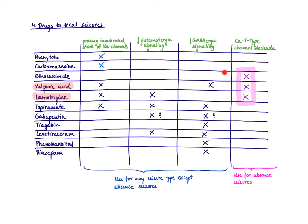And then you can see that there's a lot of other drugs that do other things. And generally, you can say, whenever you have a different mechanism of action than calcium T-type channel blockade, you can use it basically for any seizure type, except for the absence seizures, because here you need the calcium T-type channel blockade.